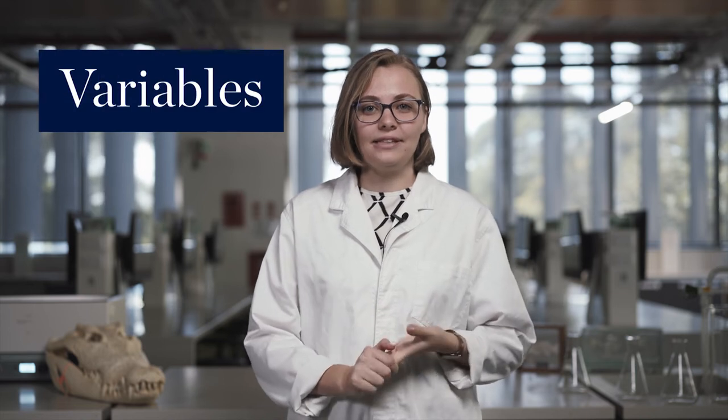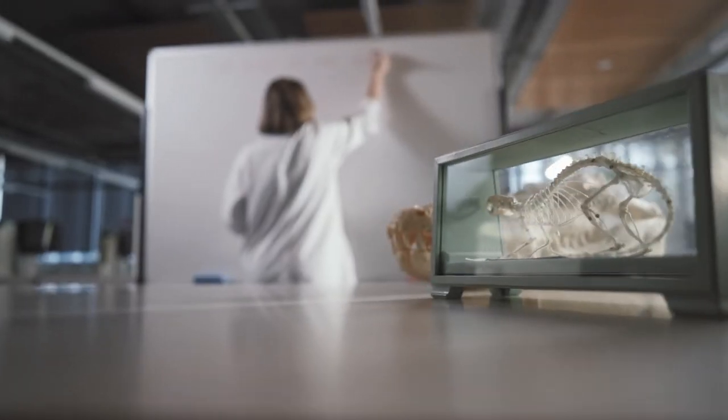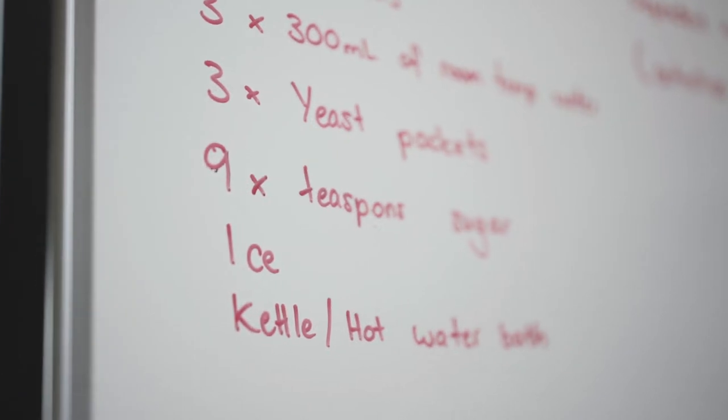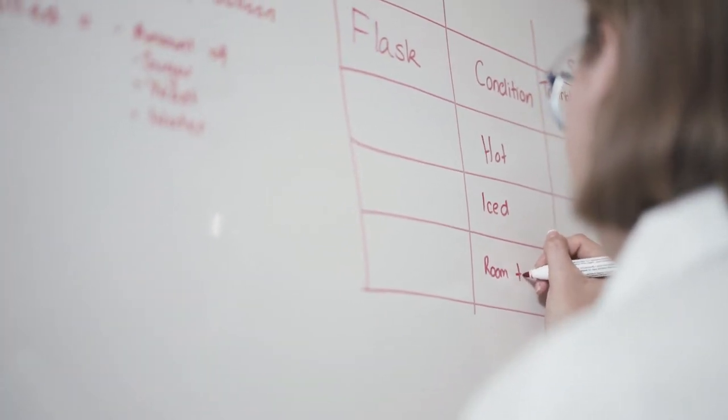There's three different variables, the independent variable, the dependent variable and your controlled variables. The independent variable starts with an I so it's the one that you change in your experiment. The dependent variable is going to be the variable that you measure and then the controlled variables are the ones that stay the same. Often there's only one independent variable and one dependent variable and then there's going to be multiple control variables throughout your experiment.